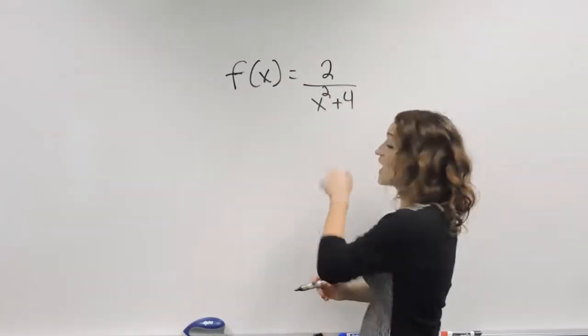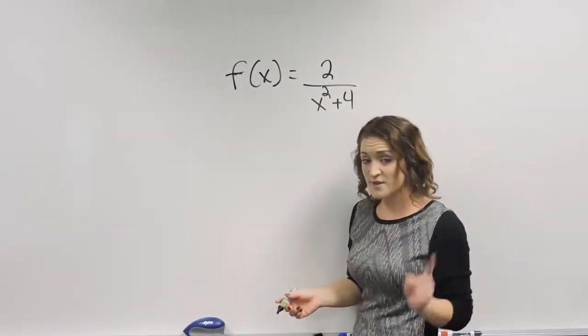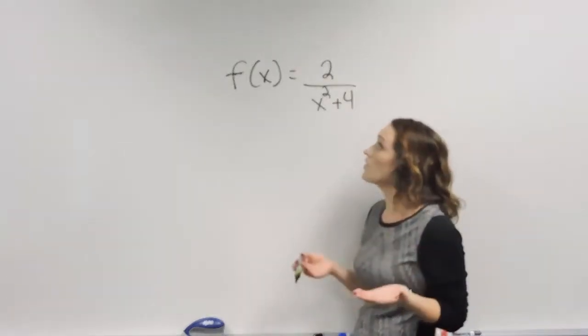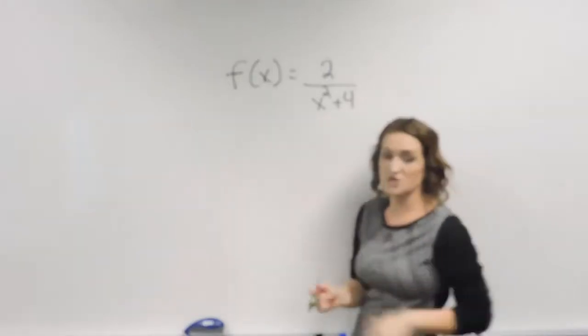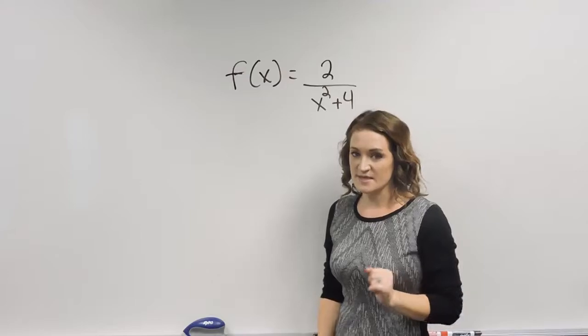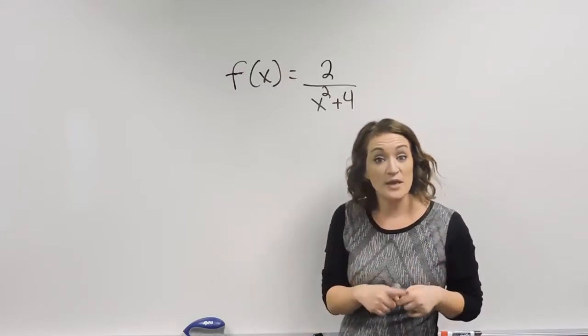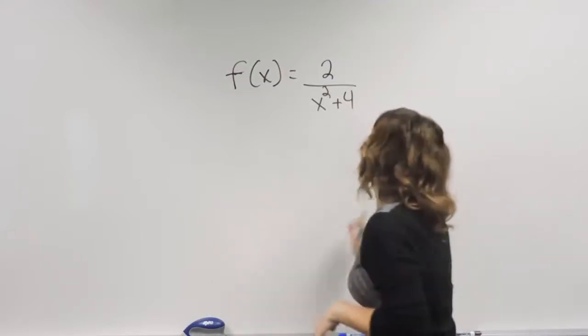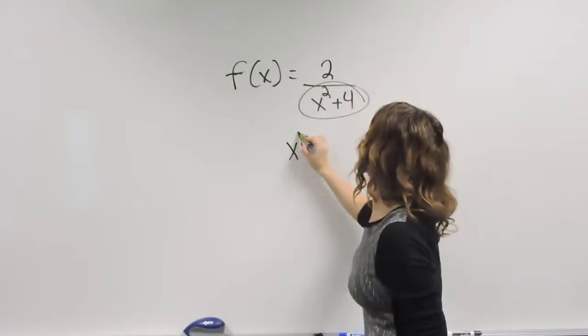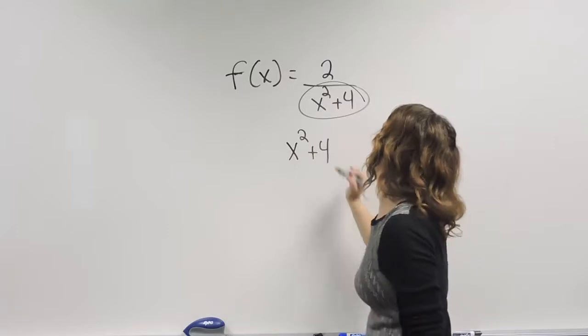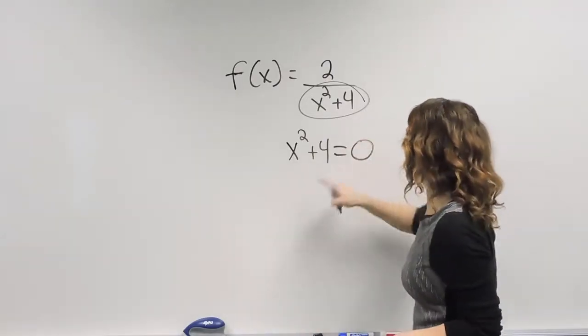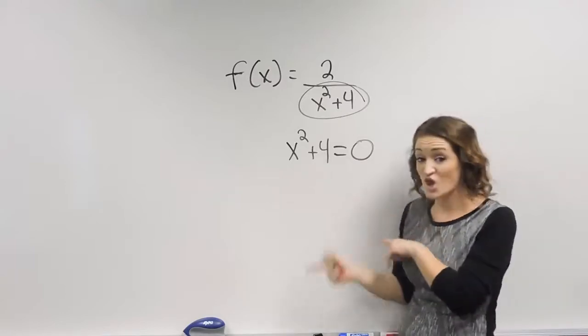A rational expression is undefined when the denominator equals zero. So what we do to determine when this would make this rational expression undefined, there's one step. Set the denominator equal to zero and solve. So whatever your denominator happens to be, in this particular example our denominator is x squared plus four, so I'm going to take x squared plus four, I'm going to set it equal to zero, and I'm going to solve this thing.